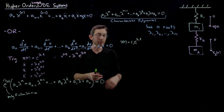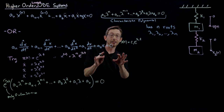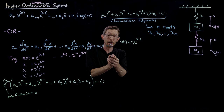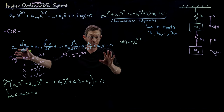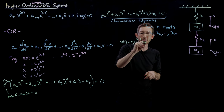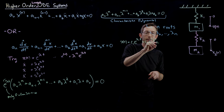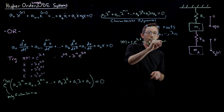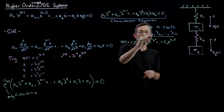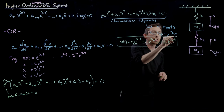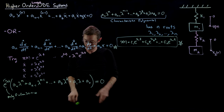That means that if I have multiple solutions, the sum of those solutions is also a solution. I'd like you to convince yourself — you can take e^(λ₁t) and e^(λ₂t), add them up, and convince yourself that those also still satisfy this differential equation. Very important. So I have c₁ e^(λ₁t) plus c₂ e^(λ₂t) plus dot dot dot, all the way up to cₙ e^(λₙt).